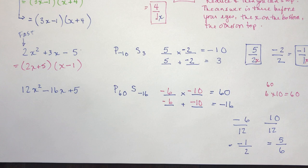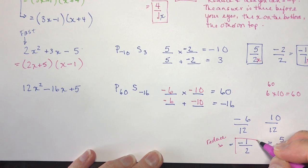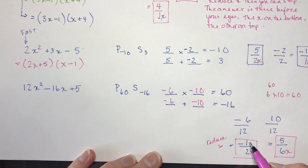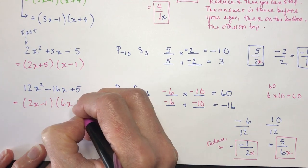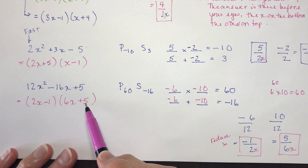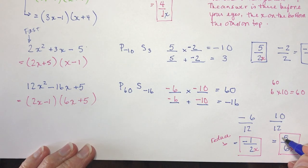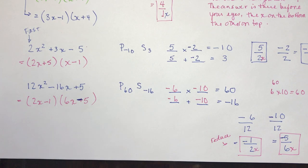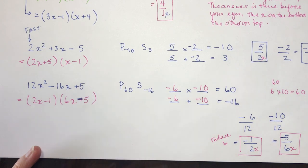Make two fractions with the first on the bottom, reduce, and then you can stop. The answer is there before your eyes — the x on the bottom, the other on top — giving me 2x minus 1 and 6x plus 5. Wait — I forgot a negative. It should have been negative 10 and negative 5. So this is 6x minus 5. Now we check: 2x times 6x is 12x squared. Minus 10x minus 6x is minus 16x. And negative times negative is positive 5.